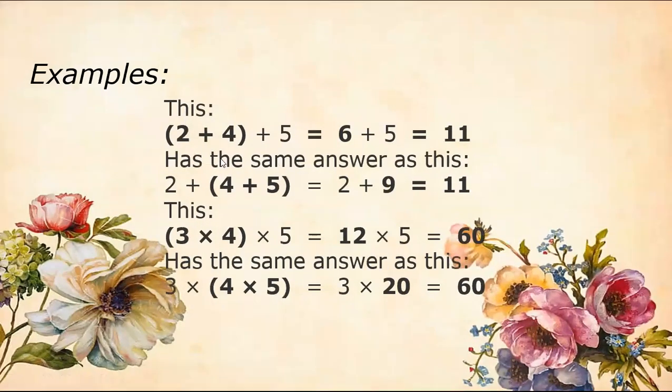Here are a few examples, like 2 plus 4 plus 5. We know that 2 plus 4 is 6, and when we add this, it equals 11. It has the same answer if we add 4 plus 5, and add it with 2 to get 2 plus 9 equals 11. 3 multiply by 4 into 5, if we multiply 3 times 4 is 12 into 5 is 60, has the same answer as if we multiply 4 with 5 and multiply with 3, we'll get the same answer as 60. So it has been proved that associative law also holds on the same two operations: addition and multiplication.